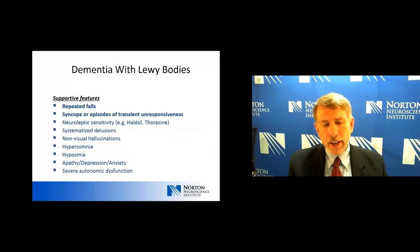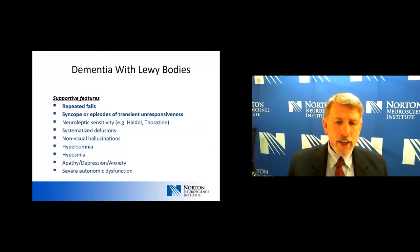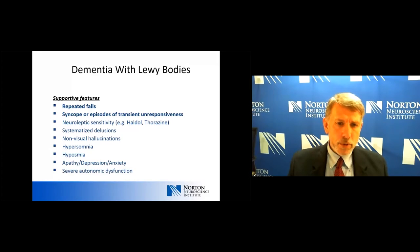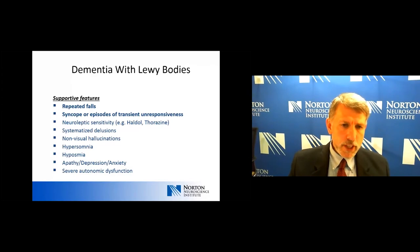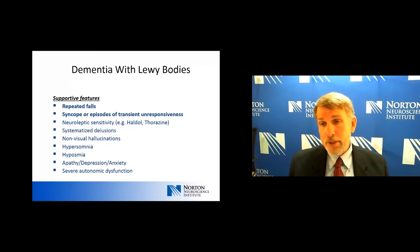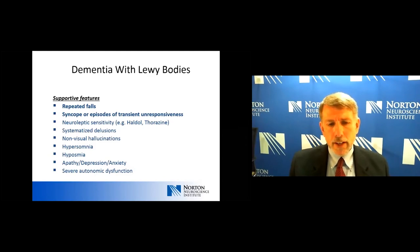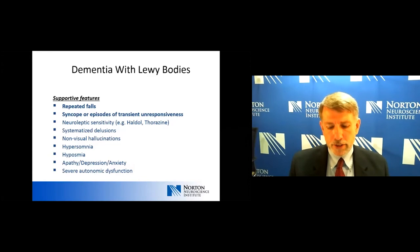Some of the other supporting features — the two I think most important are repeated falls and syncope or episodes of transient unresponsiveness, which we see commonly with this condition. Other features include great sensitivity to neuroleptics, particularly older ones like Haldol, where patients can become markedly rigid and Parkinsonian. Systematized delusions, non-visual hallucinations including auditory or tactile, hypersomnia, hyposmia — loss of sense of smell — and features like apathy, depression, or anxiety.